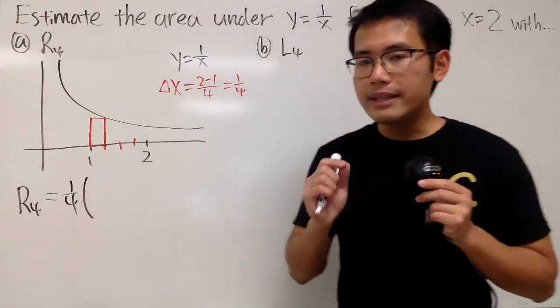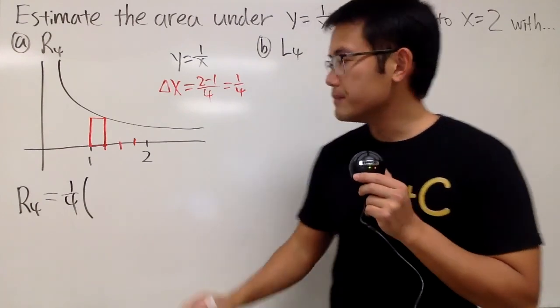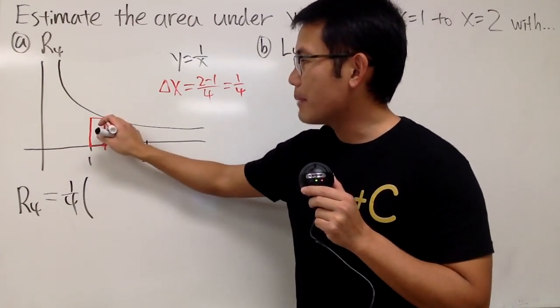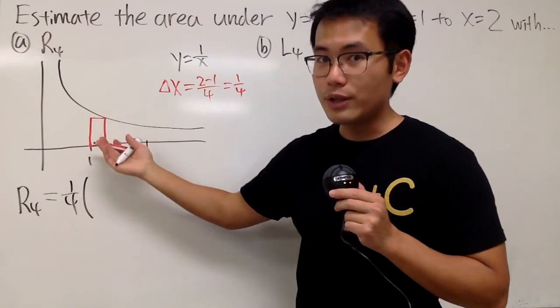The height is the following. We have to pay attention to what x value we used. Well, we use this one, and then we go up. That's how we can draw the rectangle like this.